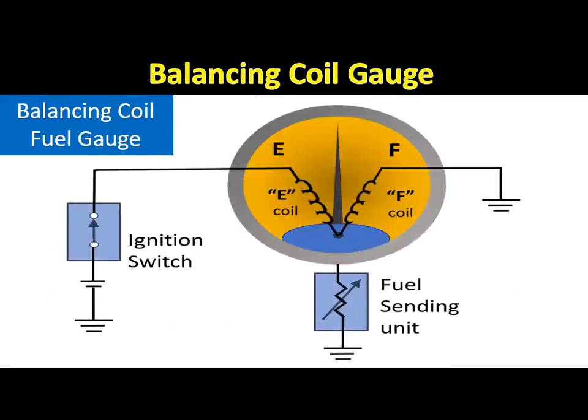When the sending unit has low resistance, most of the current flows through the high coil and the sending unit. Under this condition, the magnetic field of the high coil attracts the pointer magnet and moves the pointer to the high position. In some balancing coil gauges, voltage is supplied to the low (empty) coil, the sending unit is connected between the empty coil and the full coil, and the full coil is grounded.